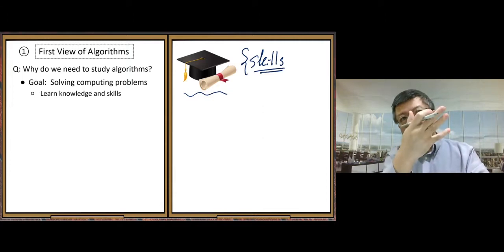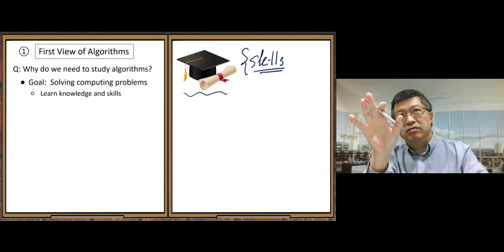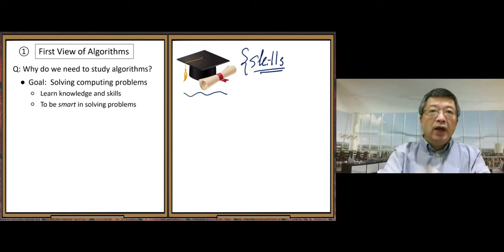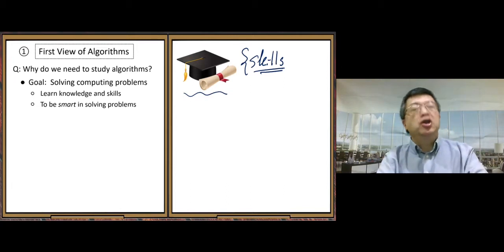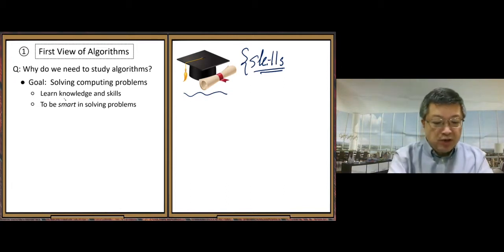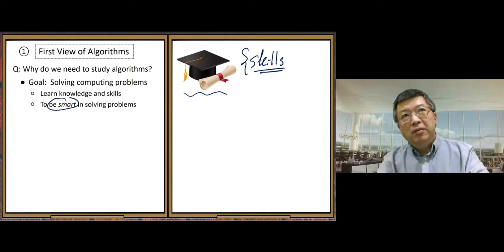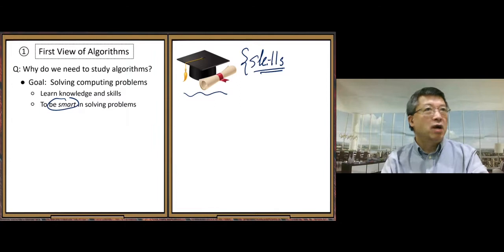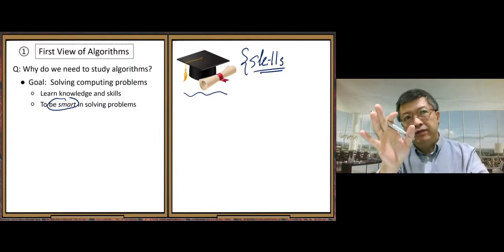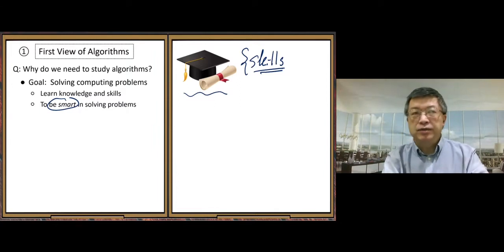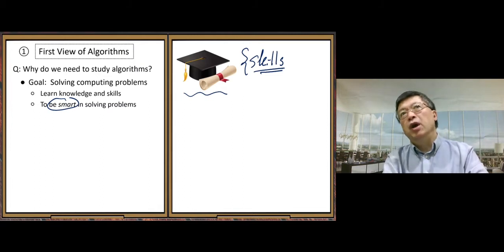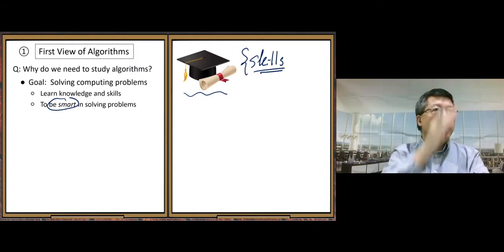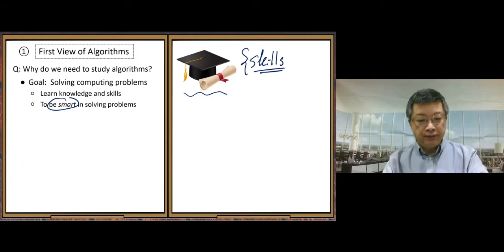So knowledge. So based on the knowledge, how do you apply the knowledge? That's the skill part. And then to be smart in solving problems. To be smart. Because there are many different ways to solve the same problem. Some way, not very smart. Very dumb. And some ways, very smart. So we want to find those smart ways to solve computing problems.